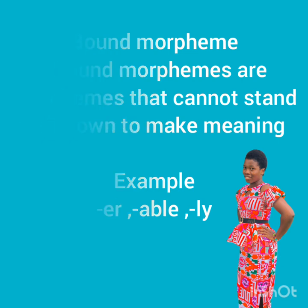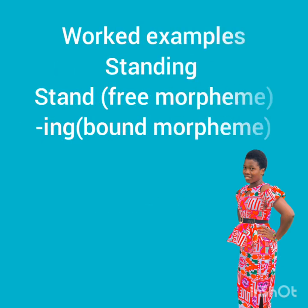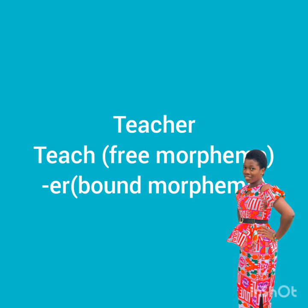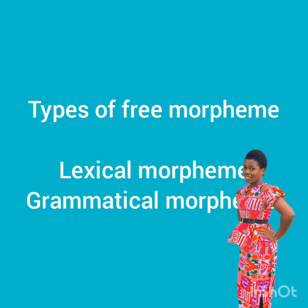Let's take a worked example: 'standing.' We can see 'stand' is a free morpheme and '-ing' is a bound morpheme. We can talk about 'teacher' as well. Let's move on to the types of free morphemes: you can get lexical morphemes and grammatical morphemes.